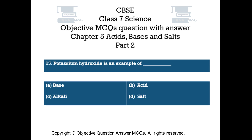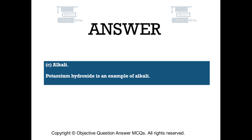Question number 15. Potassium hydroxide is an example of — Option A: base. Option B: acid. Option C: alkali. Option D: salt. The right answer is option C — potassium hydroxide is an example of alkali.